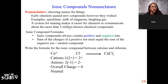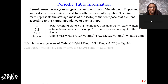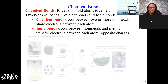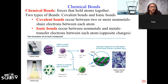So essentially what we need to understand is there are two bonds that we should understand before we even get started. The two bonds I want you to pay attention to are covalent and ionic bonds. A bond is basically something that's going to hold our atoms together. A covalent bond is when we're going to have a bond between two nonmetals.